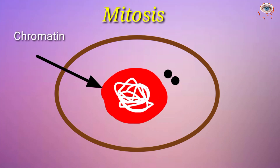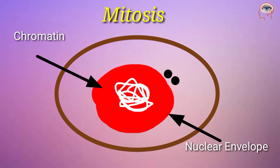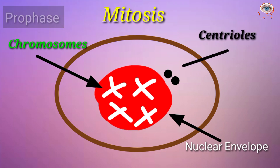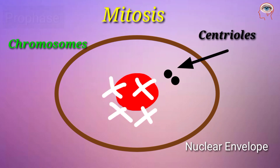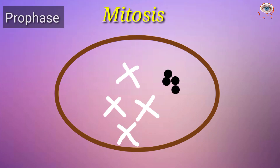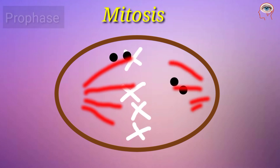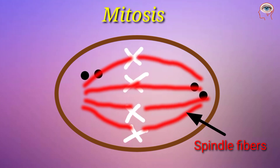With the process of mitosis, a single cell divides into two daughter cells. Prophase is the first step of mitosis. In this, the nuclear envelope disappears and centrioles duplicate and migrate towards the opposite pole, and the spindle fibers are formed.